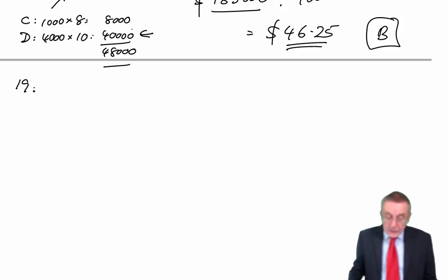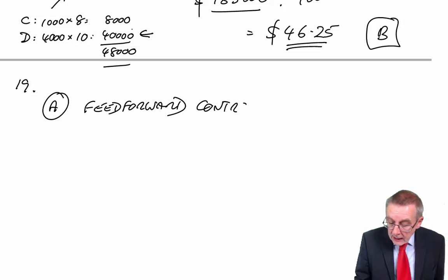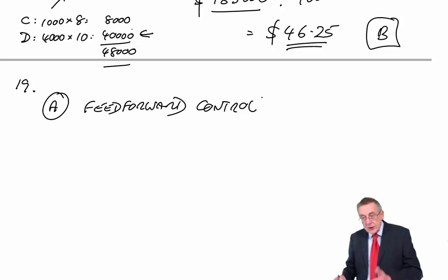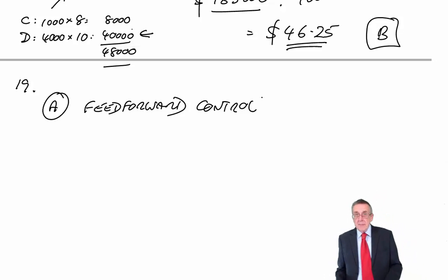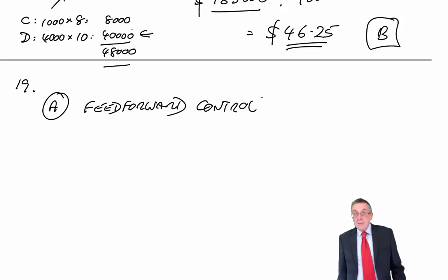Well, that sort of thinking is known as feed-forward control. It's one use of budgets. We do our budget, we see what's likely to happen - big profit, big loss, whatever. If we don't like it, here we don't want to have this big deficit, then we can change our plans right from the beginning. Postpone the purchase of equipment. Redo our budget. And perhaps now, we're not going to have a cash deficit. That's feed-forward.